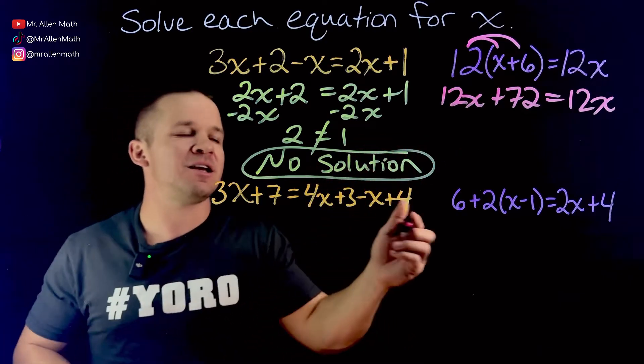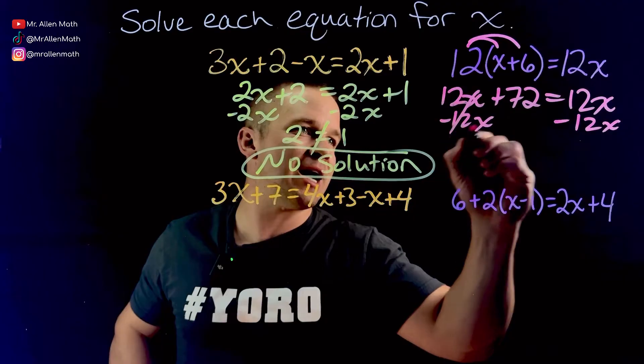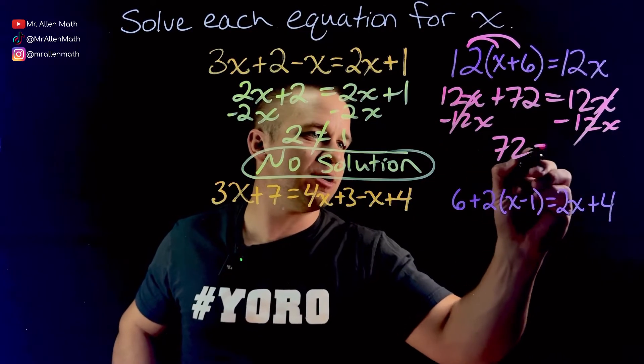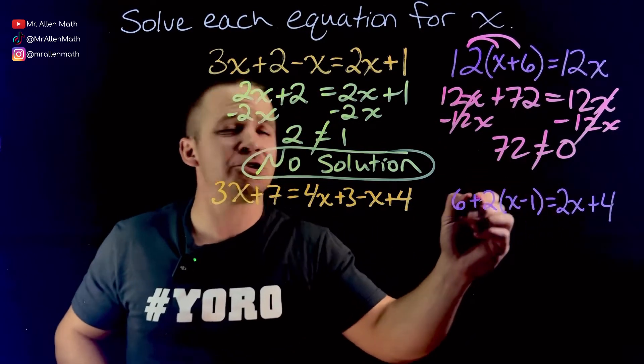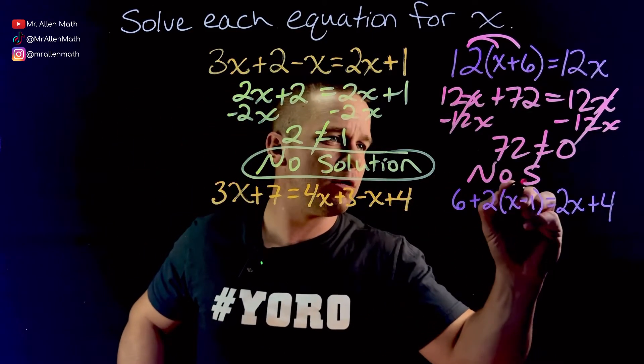I think we can see here, again, from the last problem, that if I subtract 12x on both sides, I'm gonna get 72 equals 0. And I'm pretty dang sure that 72 does not equal 0. So once again, no solution.